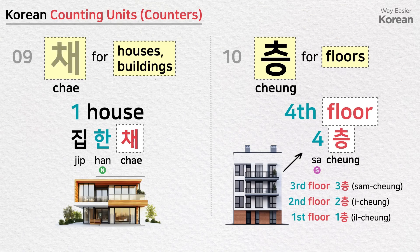채 is used to count houses or buildings: one house — 집 한 채. 층 is a counting unit for floors: 1st floor — 1층; 2nd floor — 2층; 3rd floor — 3층; 4th floor — 4층.